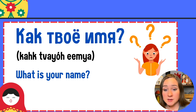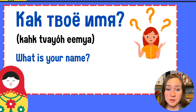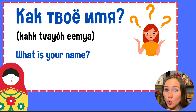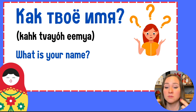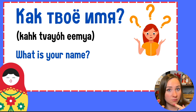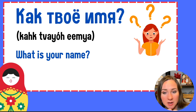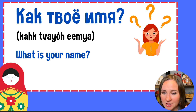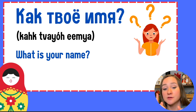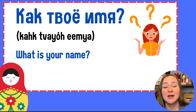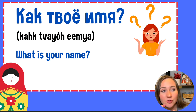And guess what? Informal: КАК ТВОЁ ИМЯ? Faster: КАК ТВОЁ ИМЯ? Merge it together, and don't forget that there is a reduced vowel — ТВАЮ. КАК ТВОЁ ИМЯ?